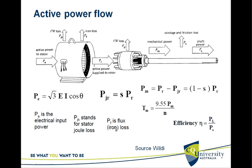The iron loss is due to eddy currents. PJR is the rotor loss: PJR = s × Pr — slip times the active power supplied to the rotor equals the losses in the rotor.